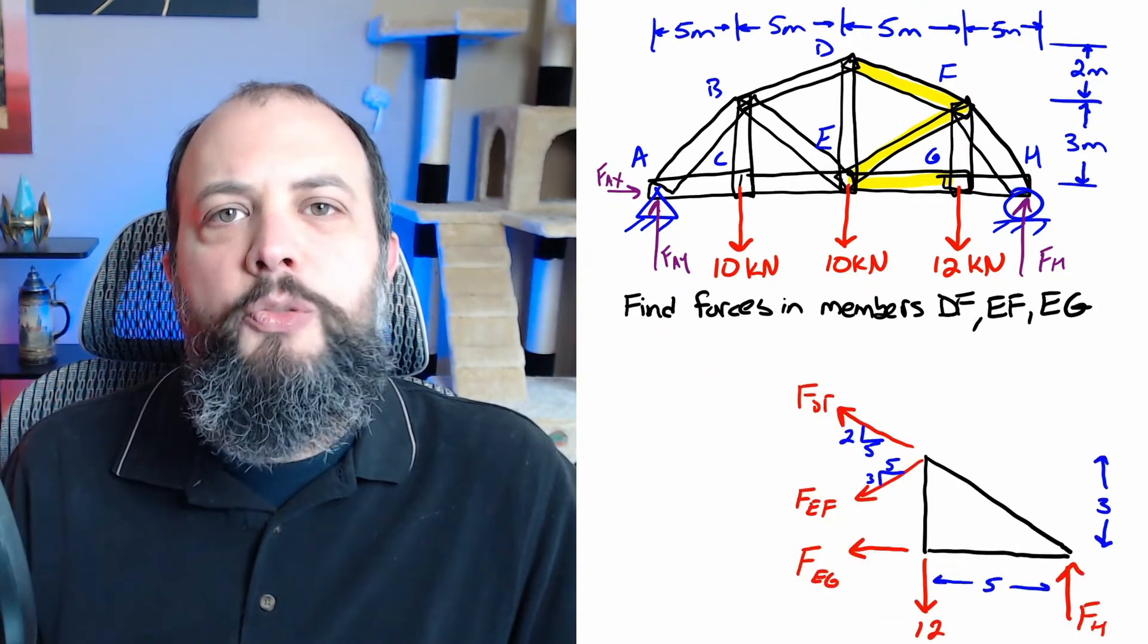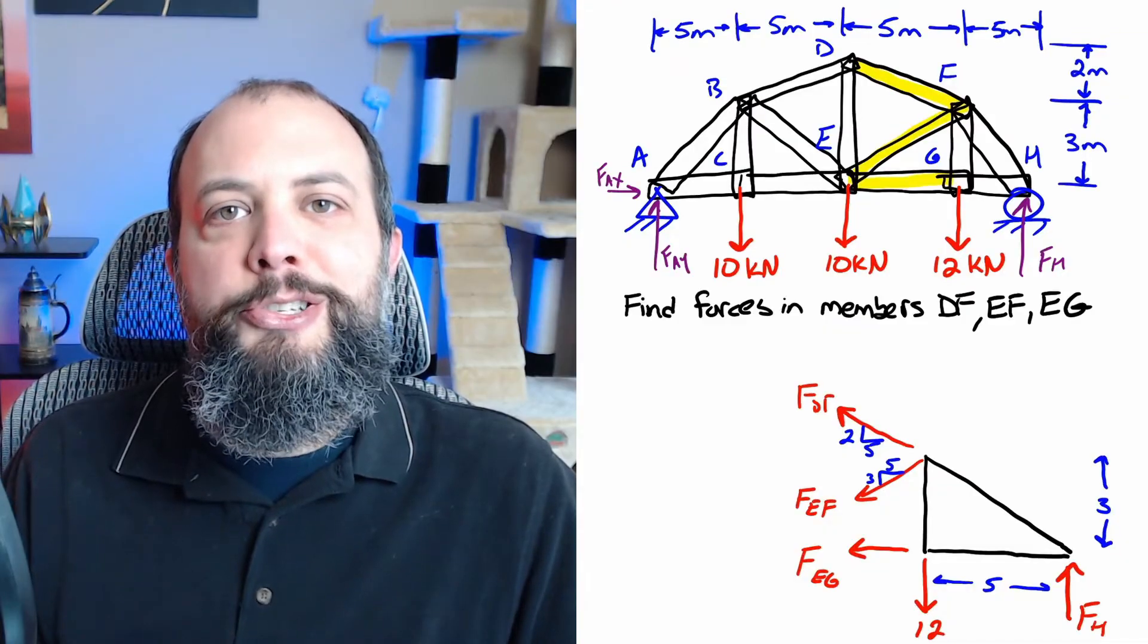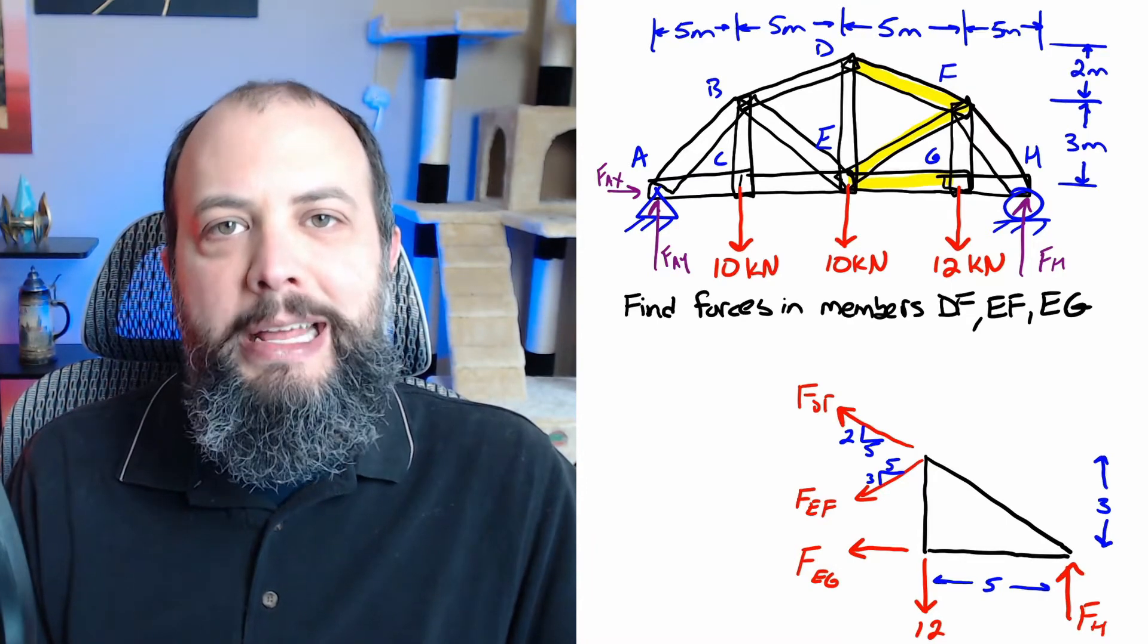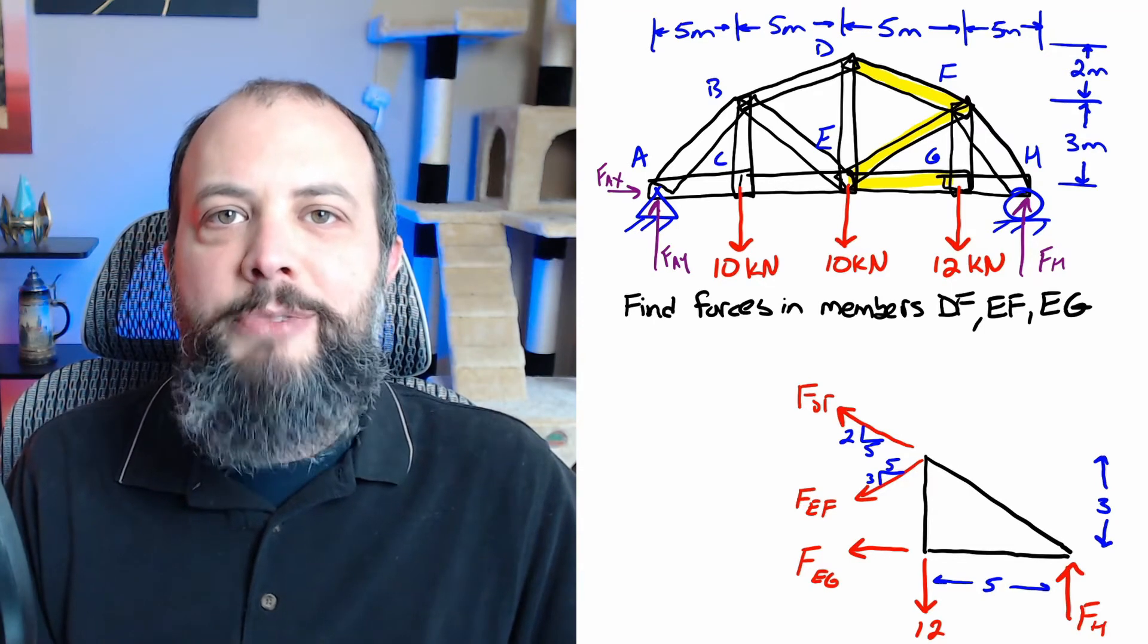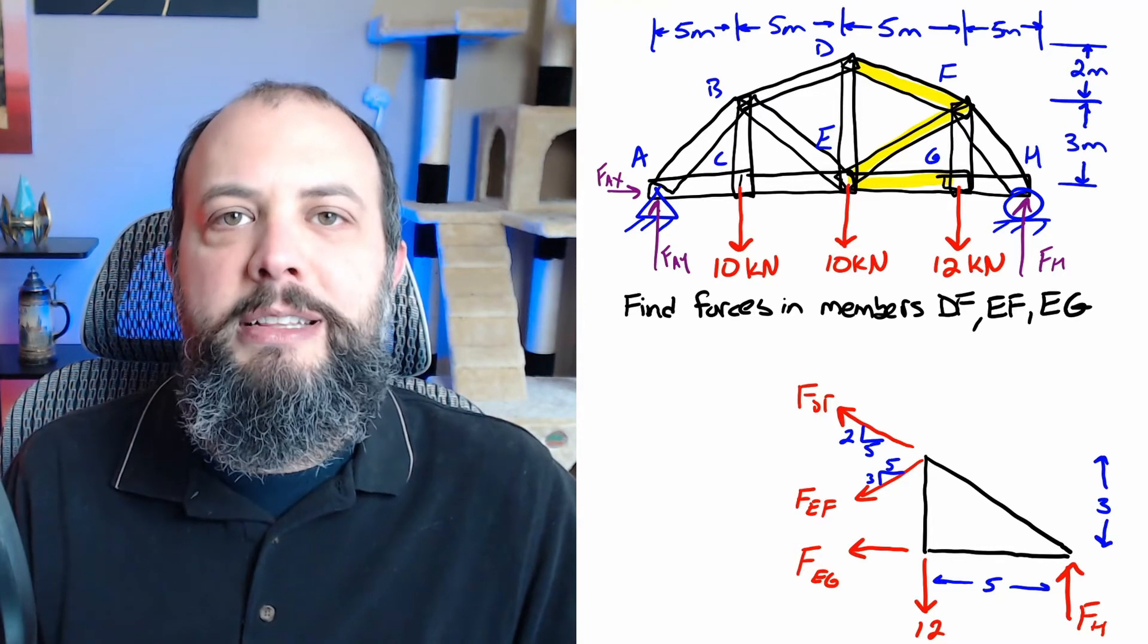For method of sections once you've figured out your reaction forces your next goal is to break the piece in half into sections and what you're going to want to do is to break the piece through as many of the final answers as you can. I've highlighted all of the final answers on the drawing and this might make it kind of obvious that a vertical split right through those three highlighted lines is going to be the best place to create the sections.